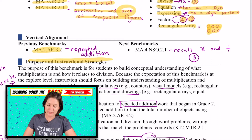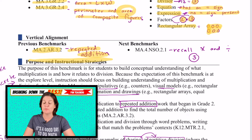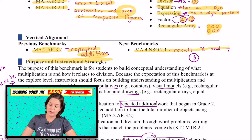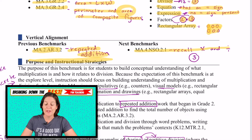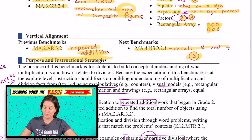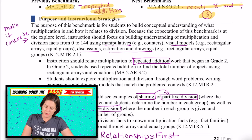2.AR.3.2 — students will have some exposure to repeated addition, which is a strategy for multiplication. So they're coming in with that knowledge, or they should be at least. And then in fourth grade, the requirement is that they can recall multiplication and division at level three with automaticity — meaning they can just spit them out.